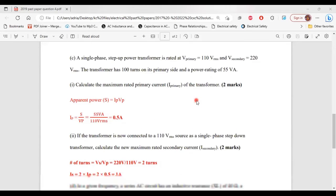So let's move on to part C now. It says a single phase step up power transformer is rated at V primary 110 V RMS and V secondary 220 V RMS. The transformer has 100 turns on its primary side and a power rating of 55 volt ampere. Part one of C, it says calculate the maximum rated primary current of the transformer. So from part C, we're given primary voltage, which is 110 V RMS, secondary voltage, which is 220 V RMS, the number of turns, which is 100, and the power rating, which is 55 volt ampere, which is the apparent power.